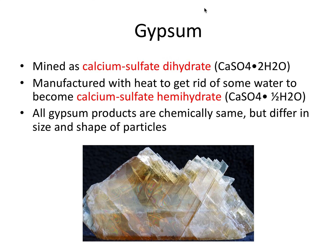Gypsum is mined as calcium sulfate dihydrate — the chemical formula is calcium sulfate with two water molecules, which is where the 'dihydrate' part of the name comes from. It's manufactured with heat to get rid of some of that water to become calcium sulfate hemihydrate, referring to the half water molecule in the formula. All gypsum products we'll discuss are chemically the same, but they differ in particle size and shape, which gives each material different characteristics in dentistry.